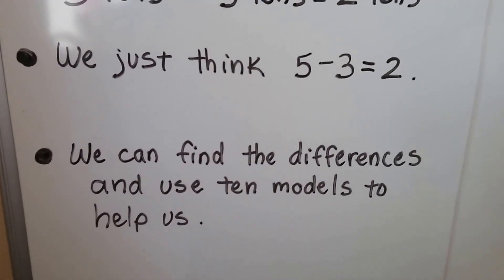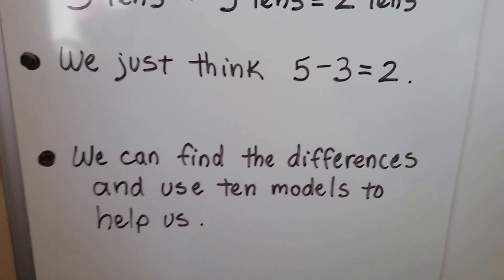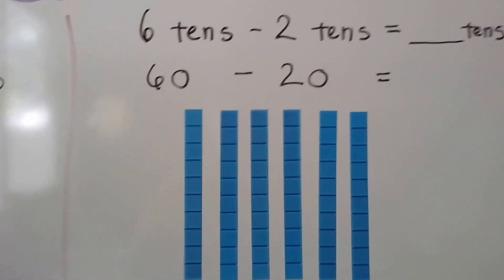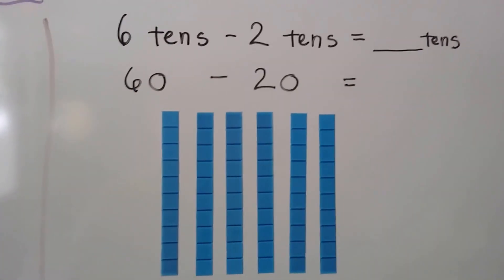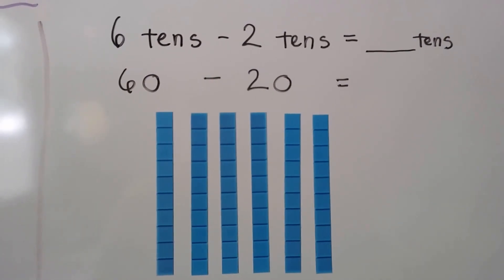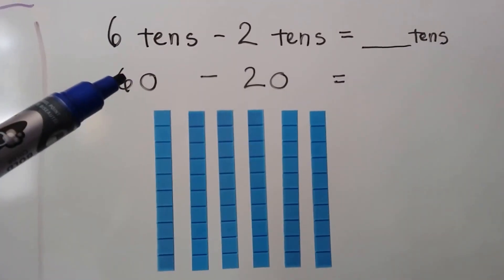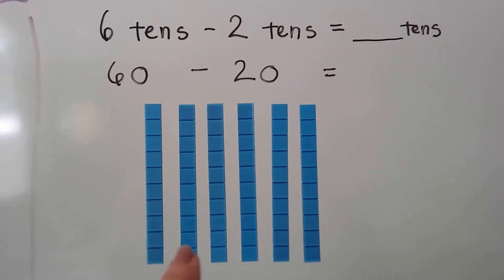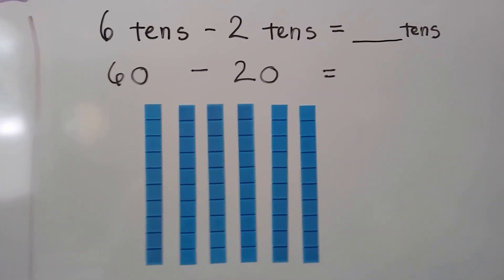We can find the differences and use ten models to help us. Let's look at the first one here. We've got six tens minus two tens. That means 60 minus 20. We have one, two, three, four, five, six tens here.